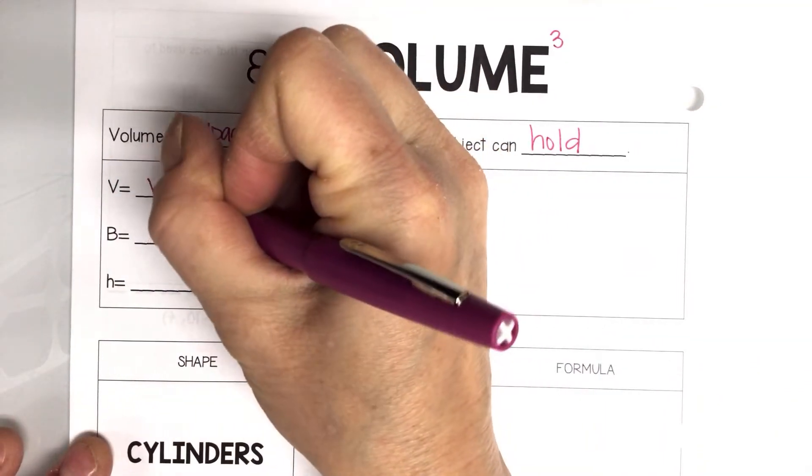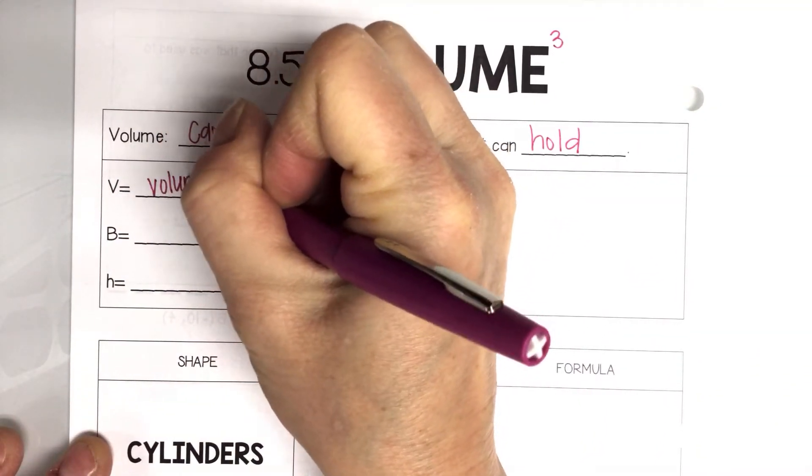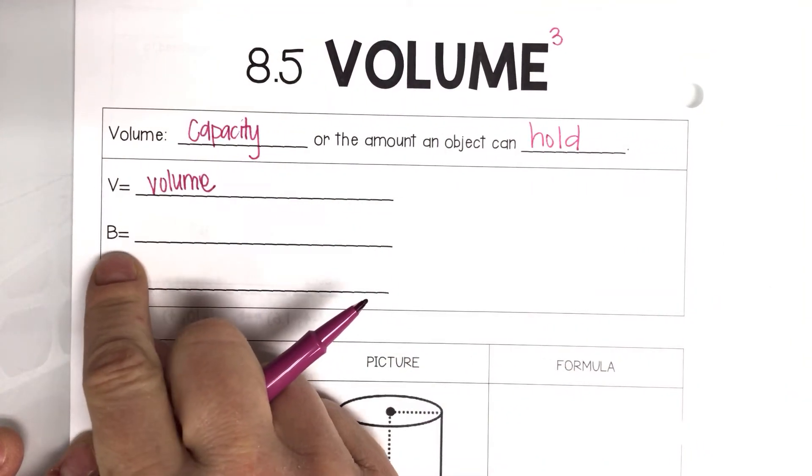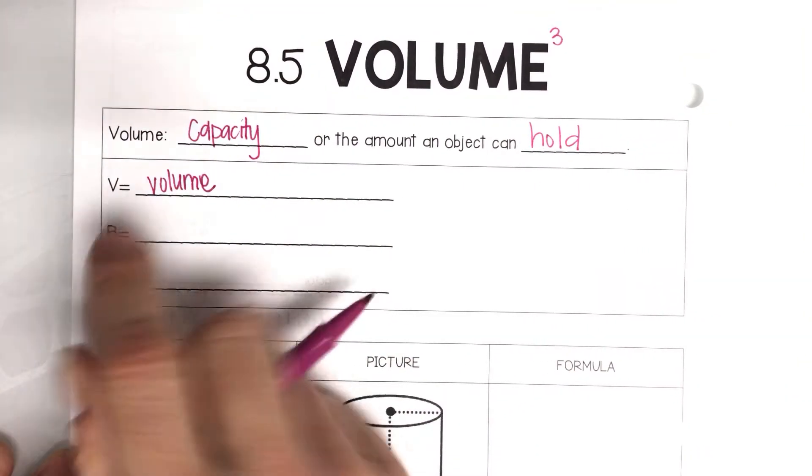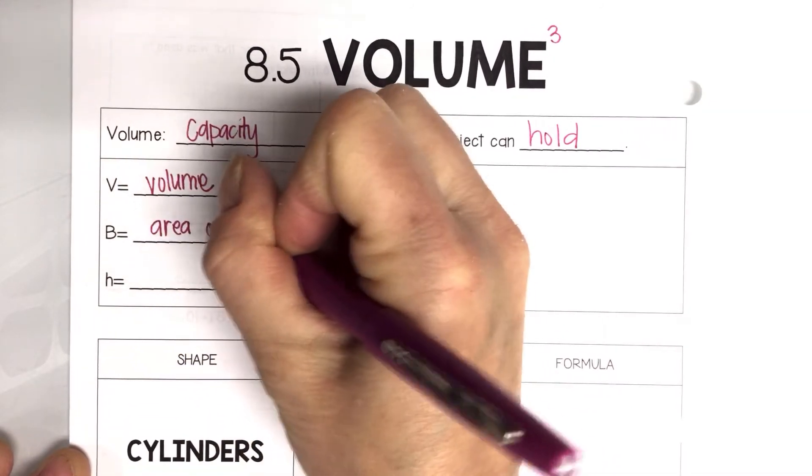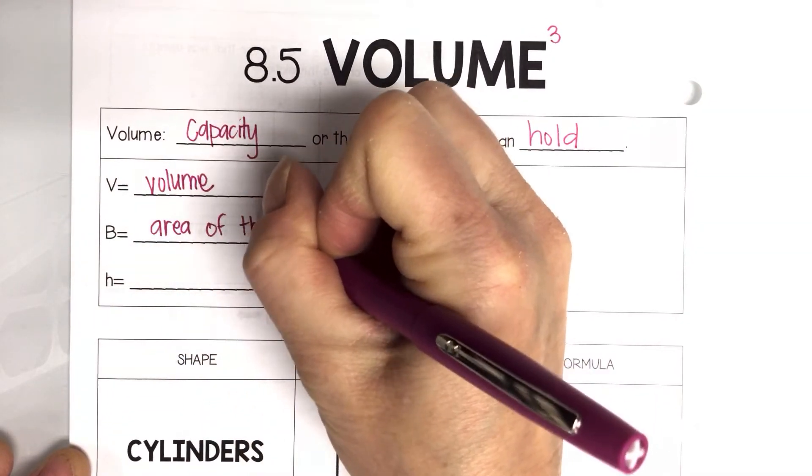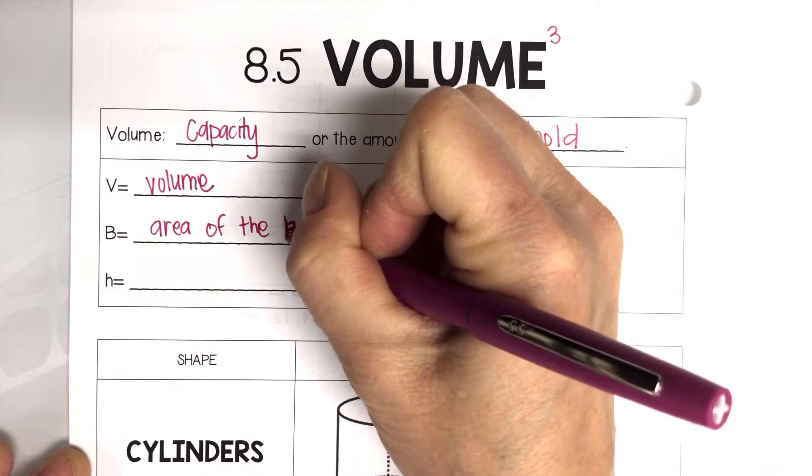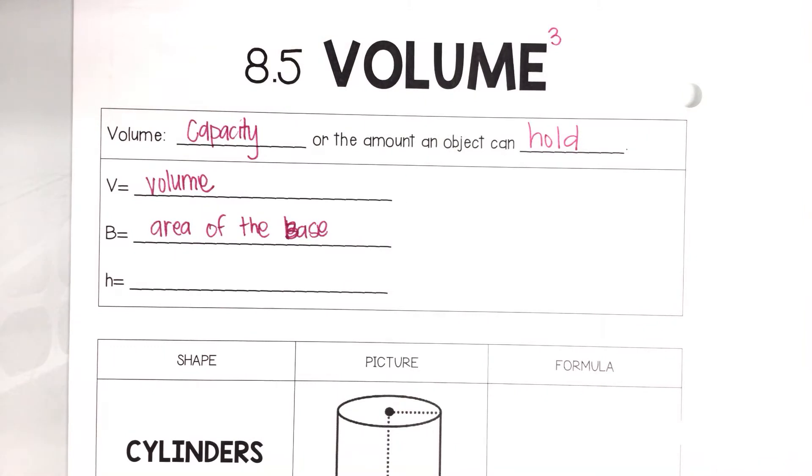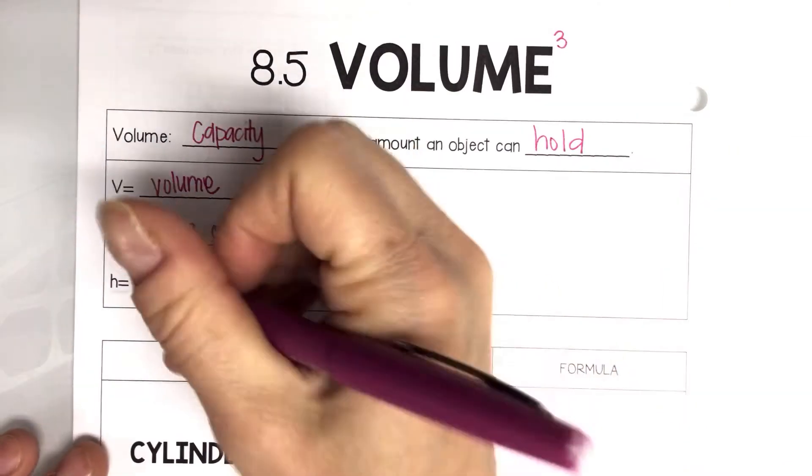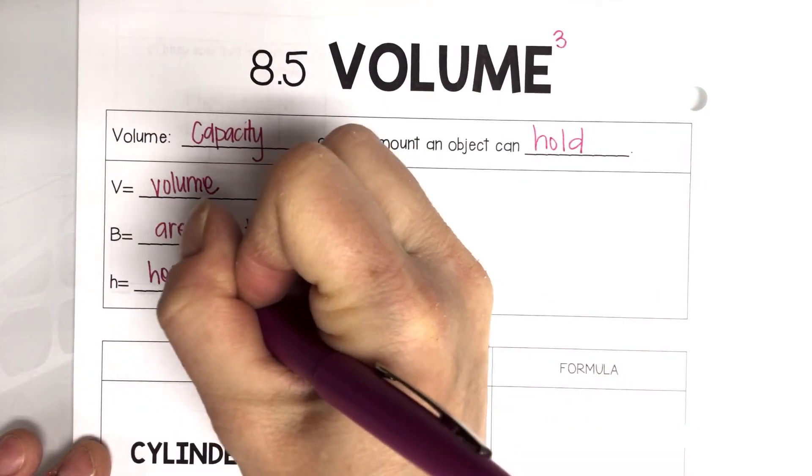Our V is going to stand for volume. You'll notice this is a capital B. A capital B is the area of the base. So whatever that base shape is, it's the area of that. So it's already been squared. They've already done like the length times the width, or whatever it is we're finding. And then h is going to be the height.